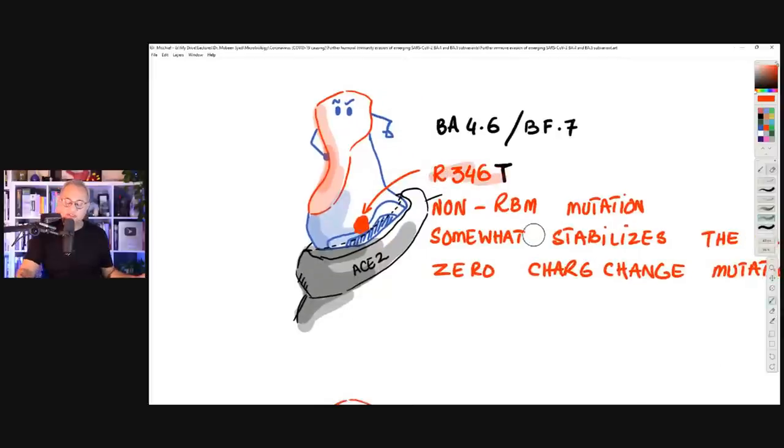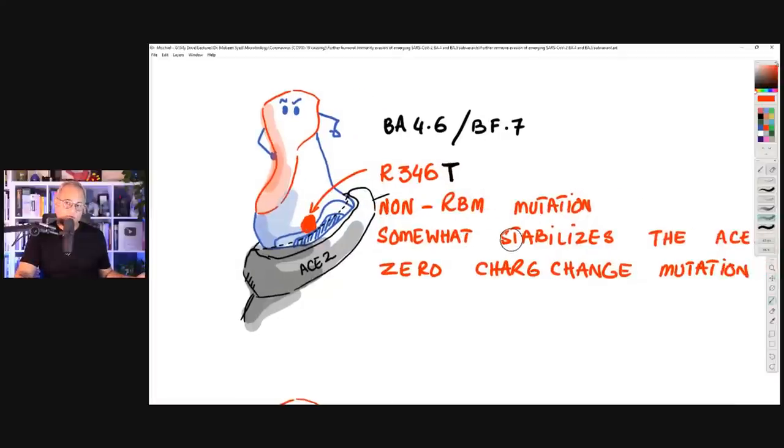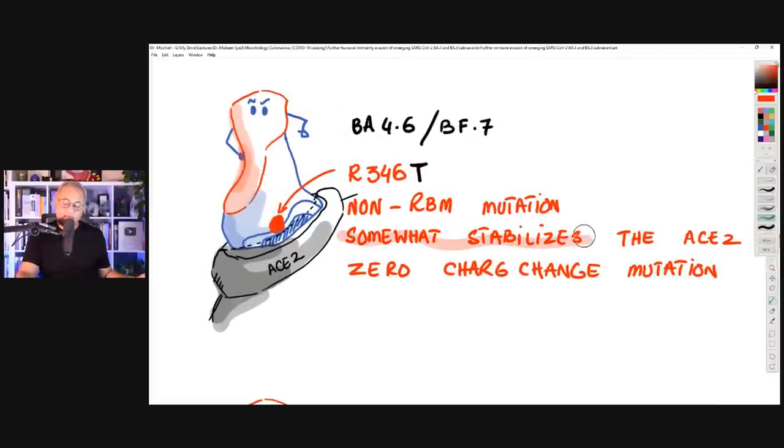However, enough to cause the antibodies not to work or to work less. This particular mutation is helpful for the virus in the following way. Number one, as I said, it is a non-receptor binding motif mutation. Secondly, it stabilizes the binding of the spike protein to ACE2. There are some mutations that actually destabilize the binding. However, this particular mutation R346 is such that it actually stabilizes this binding. At the same time, it is a zero charge difference mutation.